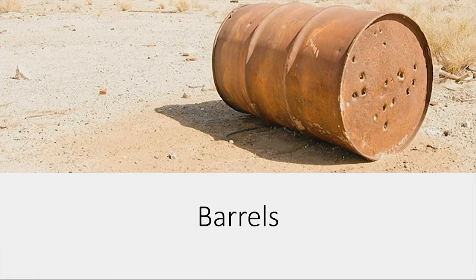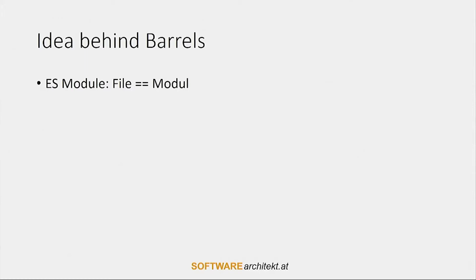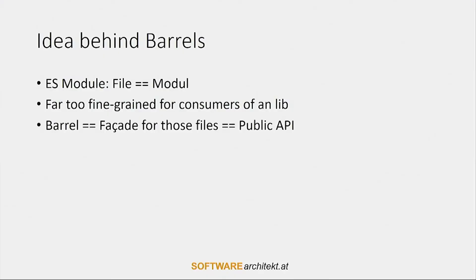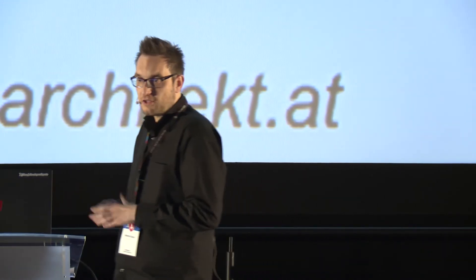In general, you will go with something like a barrel or several barrels when you are creating a library. What are barrels about? Normally a file is the same as an ECMAScript module, which is handy for us developers, but not for the consumer — it is far too fine-grained. The consumer doesn't want to think about the internal file structure of your library. Because of this, we build barrels, which are just a facade to your files — a facade that forms the public API. The consumer just needs to import this barrel and gets everything from the public API.